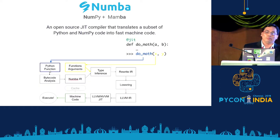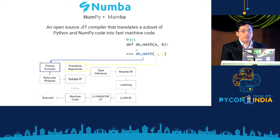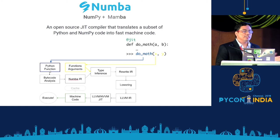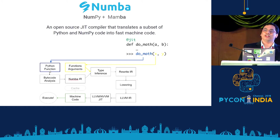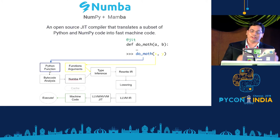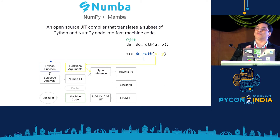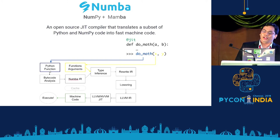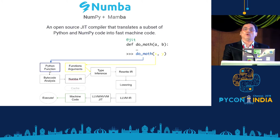Numba is derived from NumPy plus Mamba — Mamba being one of the fastest snakes on earth. It is an open-source JIT compiler that translates a subset of Python and NumPy code into fast machine code. It takes the function arguments, infers their types, performs a bytecode analysis of the function, creates a Numba intermediate representation, rewrites that intermediate representation, and finally converts it into machine code.